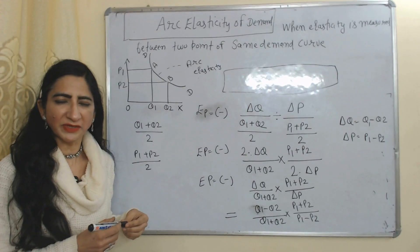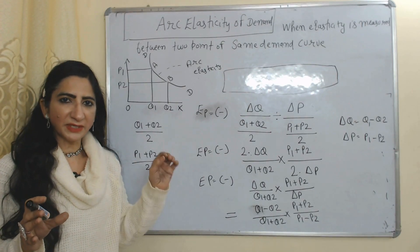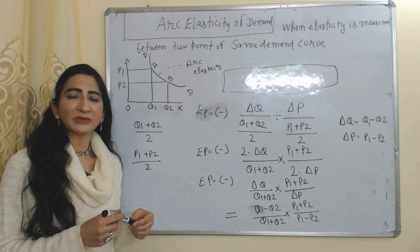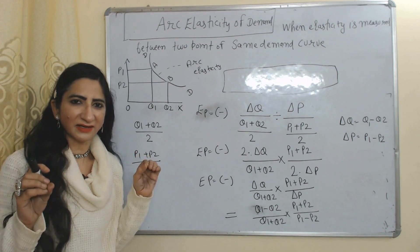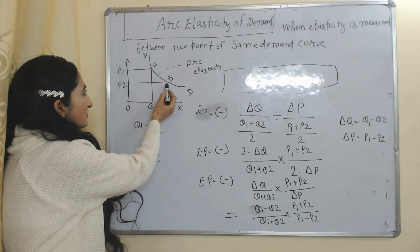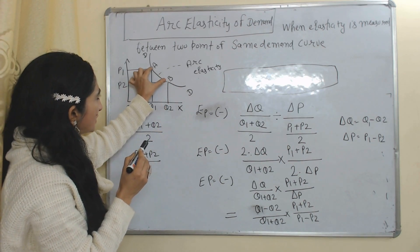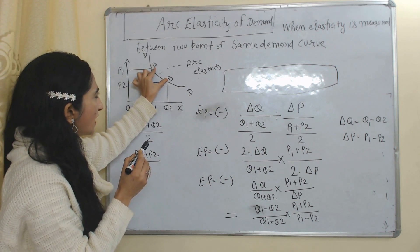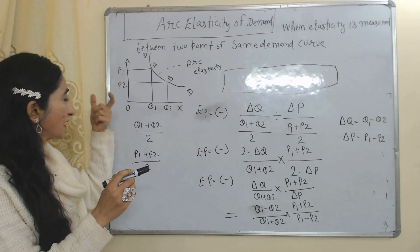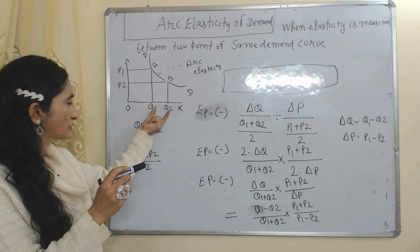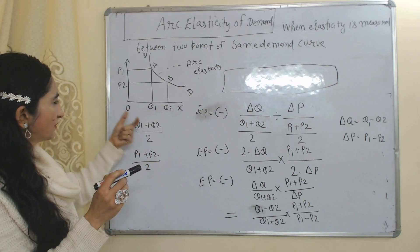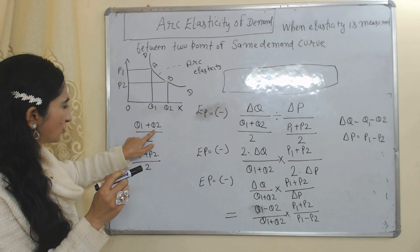Now we will see arc elasticity of demand. When we calculate elasticity between two points on the same demand curve, it is called arc elasticity of demand. For example, we have demand curve DD with two points A and B — calculating elasticity between these two points is arc elasticity. We calculate it using the midpoint method: the midpoint between Q1 and Q2, and the midpoint between P1 and P2. The formula for the midpoint of Q is Q1 plus Q2 divided by 2, and for P it is P1 plus P2 divided by 2.